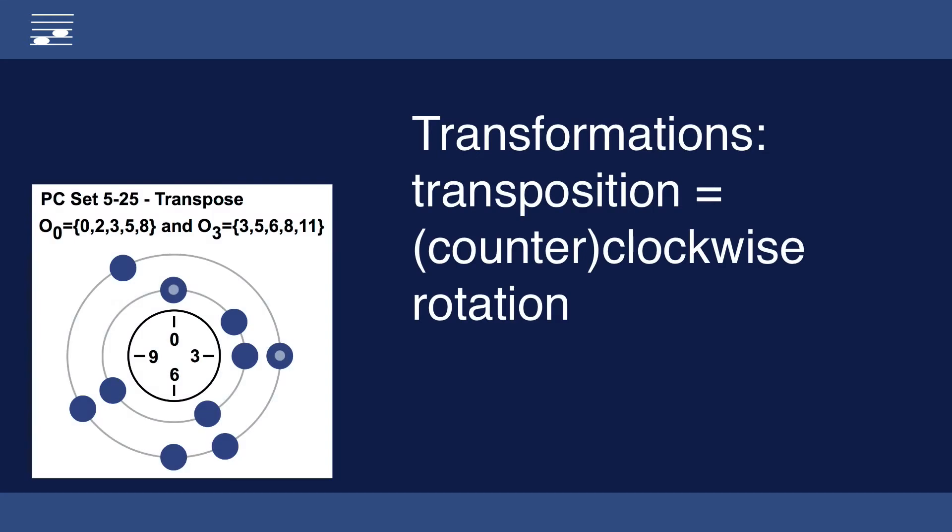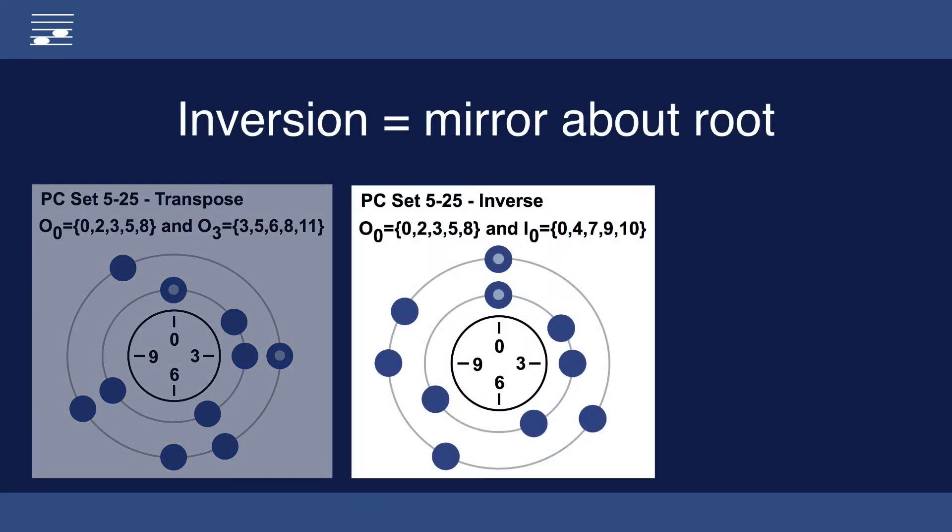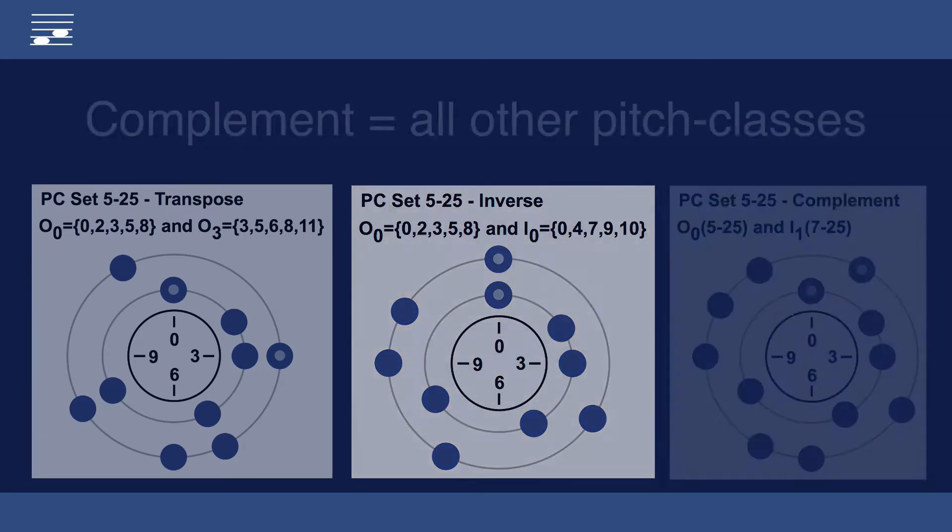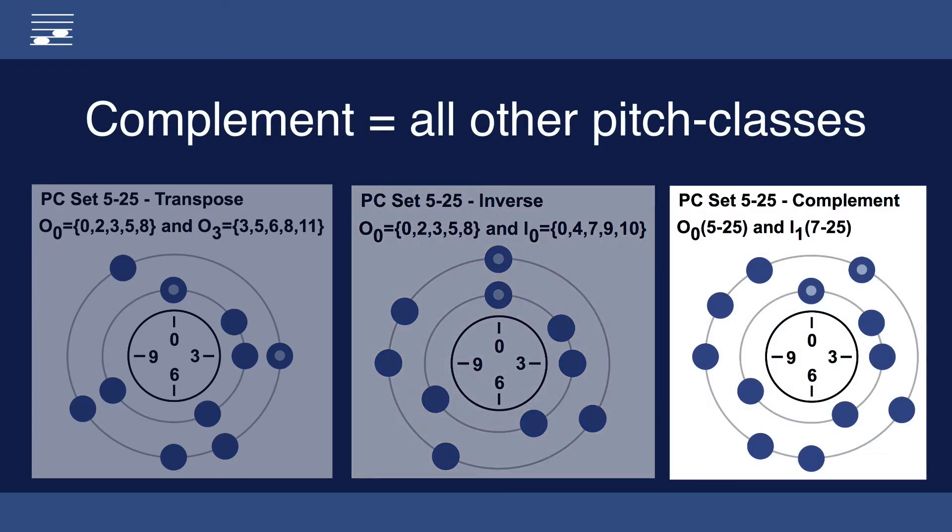The first transformation type is transposition. Transposing upward implies a clockwise rotation of the set. Inversion corresponds to mirroring the set relative to the root. And finally, the set complement are all other previously non-selected pitch classes.